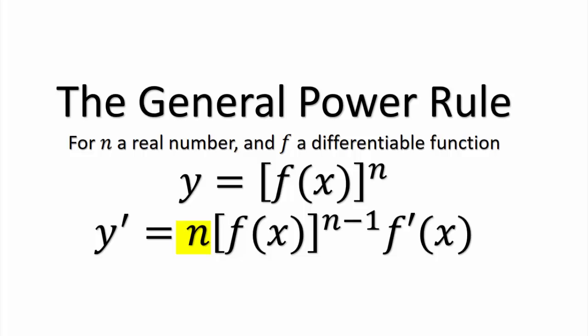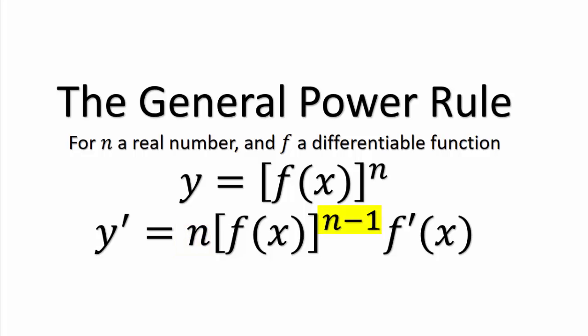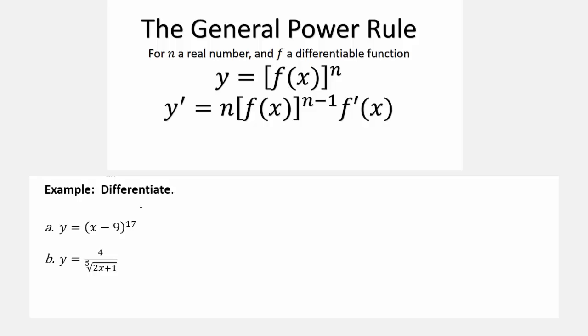Then you bring the n out front, you subtract 1 from it, and you multiply times the derivative of what was the inside function. So here's an example saying differentiate using, you can use the chain rule, you can think of it as the chain rule, or you can think of it as the power rule, because both of these involve powers. It's really the same thing. This is just a specific case where the outer function is a power.